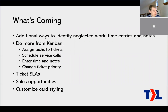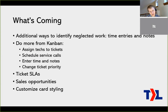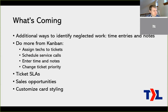I wanted to talk about what is coming up. These are things we're still working on and we'd expect to see the top ones in the next month, and hopefully get through all the rest in about the next two months. The stuff at the top is the most important — this is how we do lean. One thing is adding new ways to identify neglected work: we'd like to show when was the last time entry on a ticket and when was the last note, because those are good ways to identify neglected work. We also want to let you do more out of Kanban — in particular, assign technicians to tickets, schedule service calls, enter time for your engineers, and change the ticket priority.